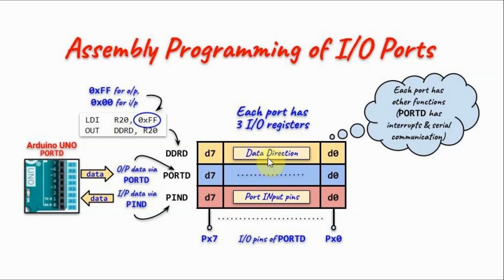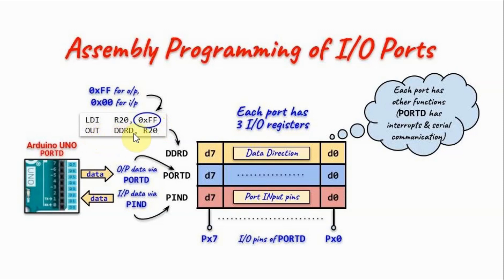Each port has three I/O registers: the Data Direction Register, the Port Register, and the Port Input Pins Register. The Data Direction Register determines whether the port is an input or output port. If we want to program the port as an output port, we send the byte FF to this register. If we want to program it as an input port, we send the byte 0. In this assembly example, we are programming the port as an output port by sending the byte FF to the Data Direction Register of Port D using the OUT instruction.